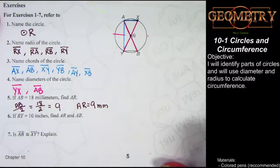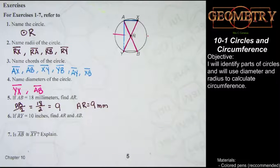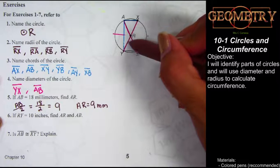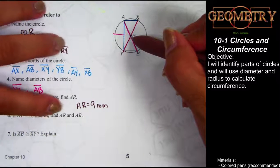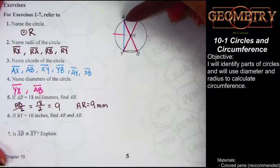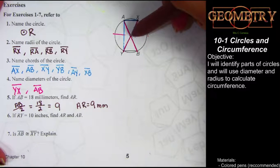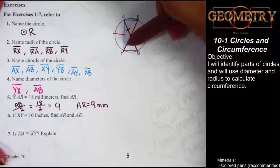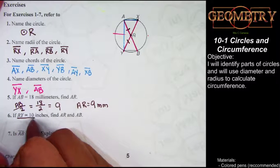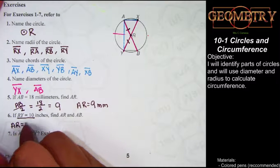Pause the video to work on number 6, and when we come back we'll show how to find AR and AB. Welcome back. Looking at number 6, RY is 10 inches. RY is a radius, and AR is also a radius. Because the circle has the same distance from the center to any point on the circle, all of the radii are congruent — they're all equal to each other. So if RY is 10 inches, then AR must also be 10 inches.